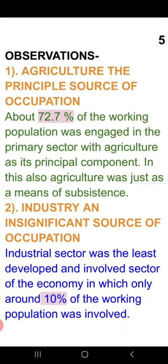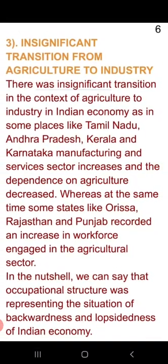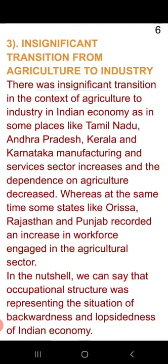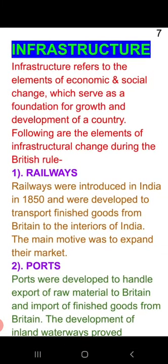The observations from this data are: agriculture was the principal source of occupation — the maximum number of people were engaged in agriculture, with 72.7% of the population working in it. Industries were an insignificant source of occupation because only about 10% of the population was engaged in them. There was an insignificant transformation from agriculture to industries — in states like Tamil Nadu, Andhra Pradesh, Kerala, and Karnataka, the manufacturing sector was opening up and people started leaving agriculture to engage in industries. In a nutshell, the occupational structure showed the backwardness of our country's economy.